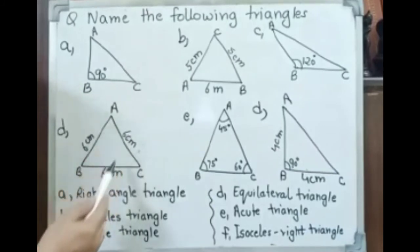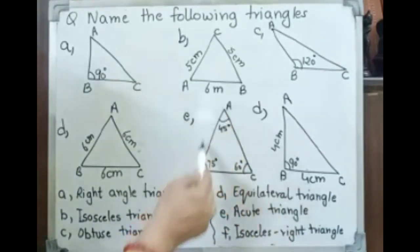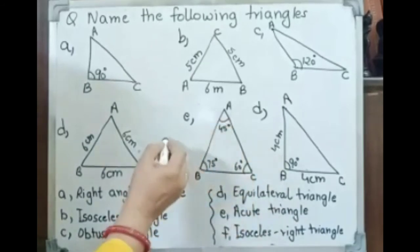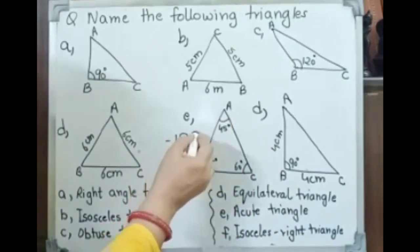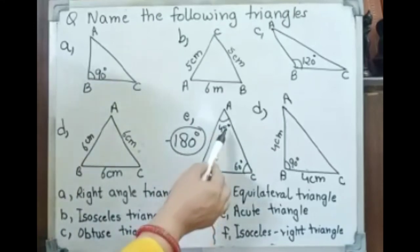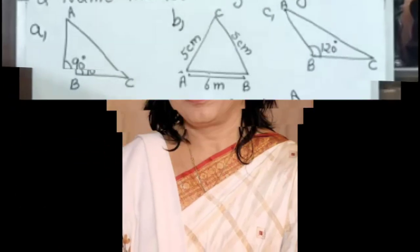A triangle with sides 6 cm, 6 cm, 6 cm — all sides are equal — is an equilateral triangle. All angles are less than 90 degrees, so it is also an acute triangle. The sum of all three angles is always 180 degrees. Here, 75 plus 45 plus 60 equals 180. Again, two sides equal with a 90-degree angle means isosceles right triangle.